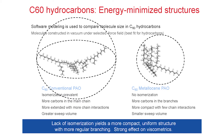There are more carbons in the main chain in the CPAO and more carbons in the branches in the MPAO. The CPAO is more extended and will have a larger sweep volume with more chain interactions. The MPAO is more compact and will have a smaller sweep volume with fewer interactions. These structural differences have a significant effect on the viscometrics.